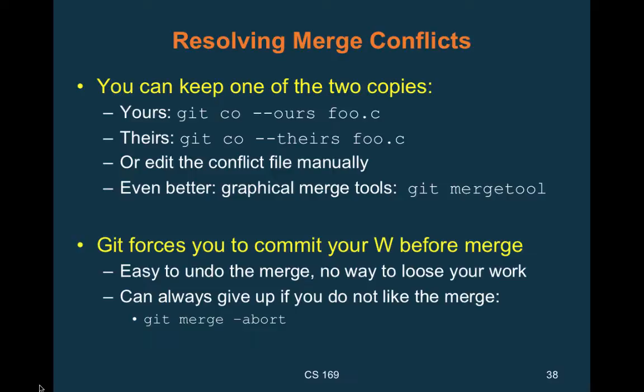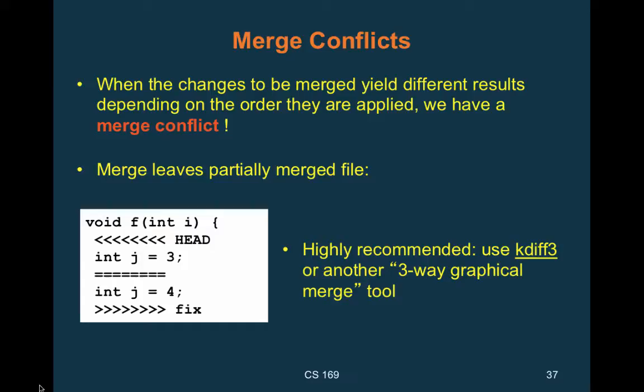Student question: Can you run one of those checkout commands and then do an abort? Yes, you can abort at any point. On the conflict markers: the top section labeled HEAD is your change; the bottom is the change from the branch you're merging in, called 'fix'. Using mergetool allows you to pick conflict resolutions one by one; from the command line, checkout --ours or --theirs affects the whole file.